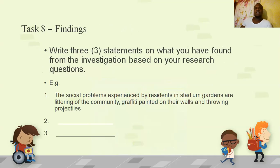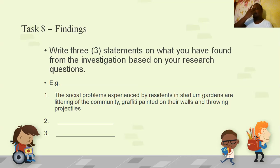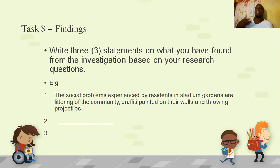For findings, you need three statements of findings from the investigation. Your statements of findings must answer your research questions — the major cause, the major effect or impact, and the major solution. Whatever had the highest percentage in each category becomes your finding. For example: 'The major cause of teenage pregnancy is not using a condom. The major impact of teenage pregnancy on a teenage mother is [x]. The major solution put forward to reduce teenage pregnancy in my community is [y].' Three statements and you're done.